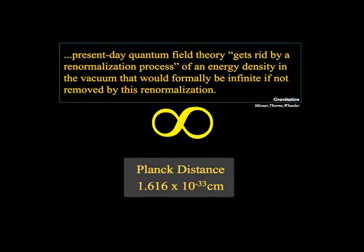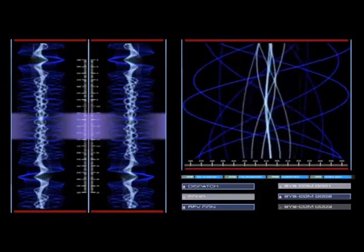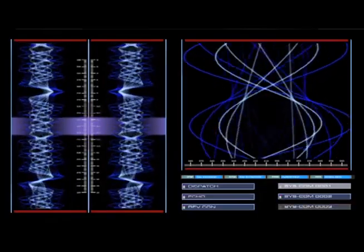The Planck's distance is supposedly the smallest thing the universe does. You could think of it simply as the distance it takes a photon to go across itself — the smallest wavelength the universe is supposed to be able to do. I don't think the Planck's distance is the smallest thing the universe does. I think it's a boundary condition that is fundamental in relationship to our experience, but there's further structure below the Planck's distance.